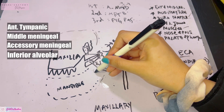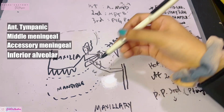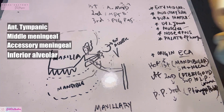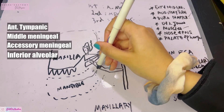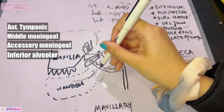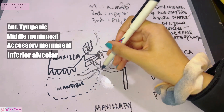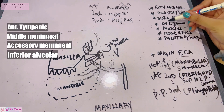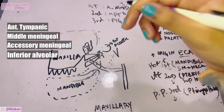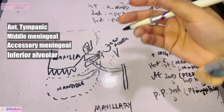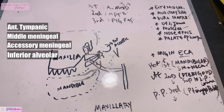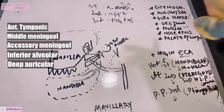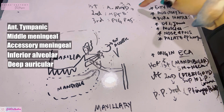I is for the inferior alveolar artery. Just like the inferior alveolar nerve, it enters the mandibular canal. Before entering, it gives a lingual branch and a mylohyoid branch. It supplies the lower jaw teeth, the mylohyoid muscle, and also the tongue. D is for the deep auricular branch, which supplies mostly the external ear and some part of the tympanic membrane.